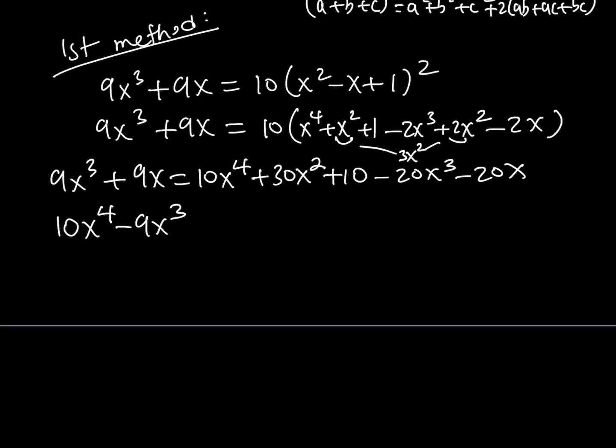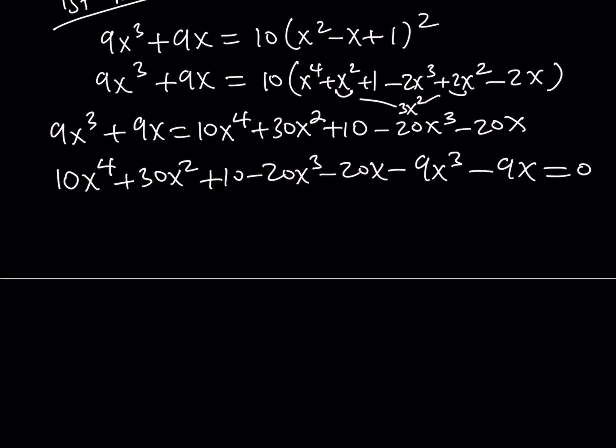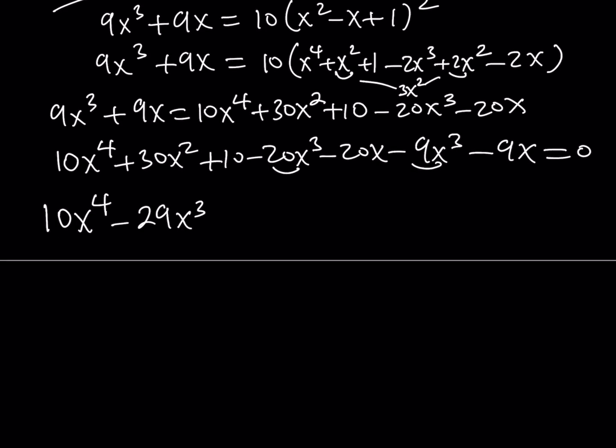That's going to give me 10x to the fourth minus 9x cubed. Let's put everything on the same side first, and now I'll take care of the like terms. We're getting 10x to the fourth, and then negative 20x cubed minus 9x cubed is going to give me negative 29x cubed. And then I have 30x squared. So I have 30x squared. And now, we have negative 29x. And finally, I have plus 10.